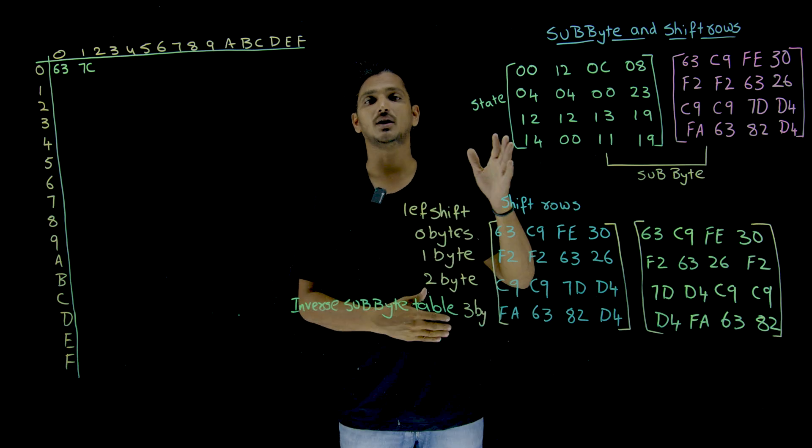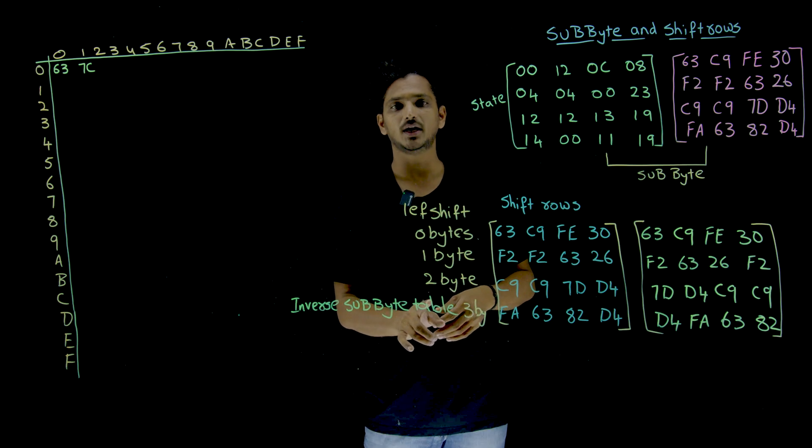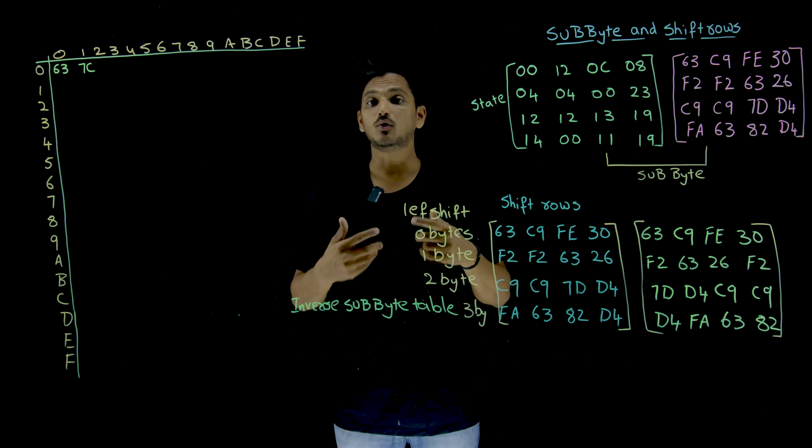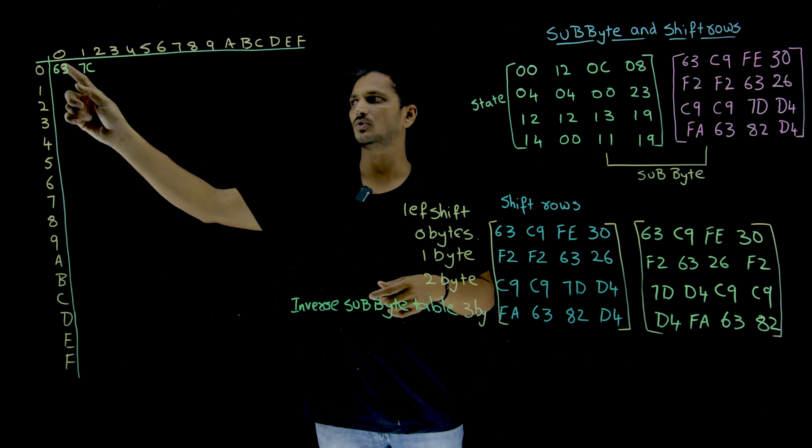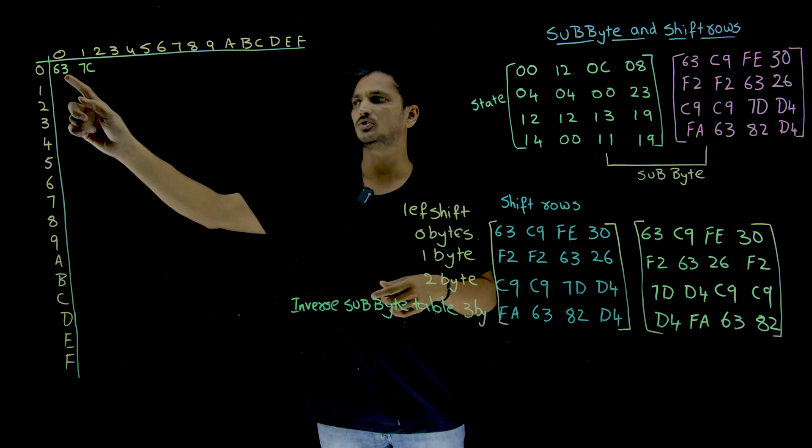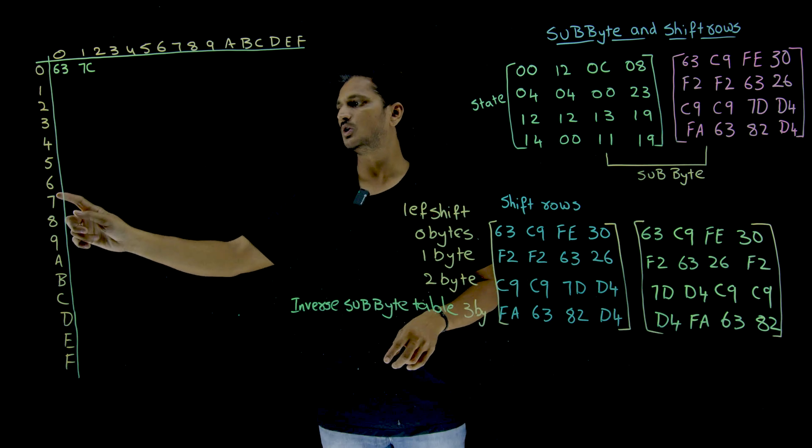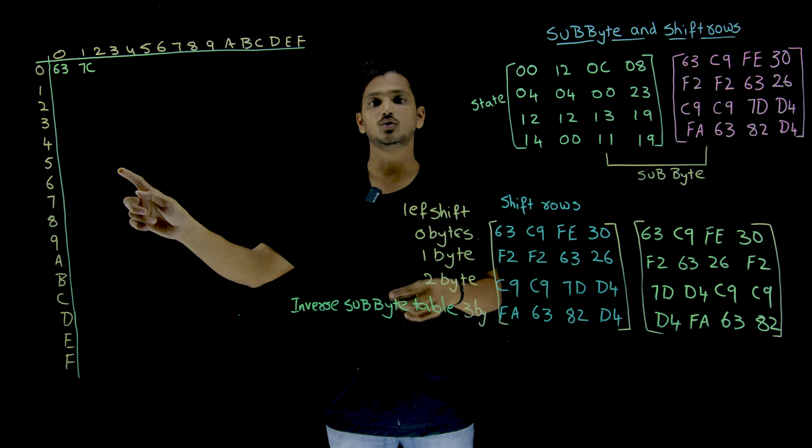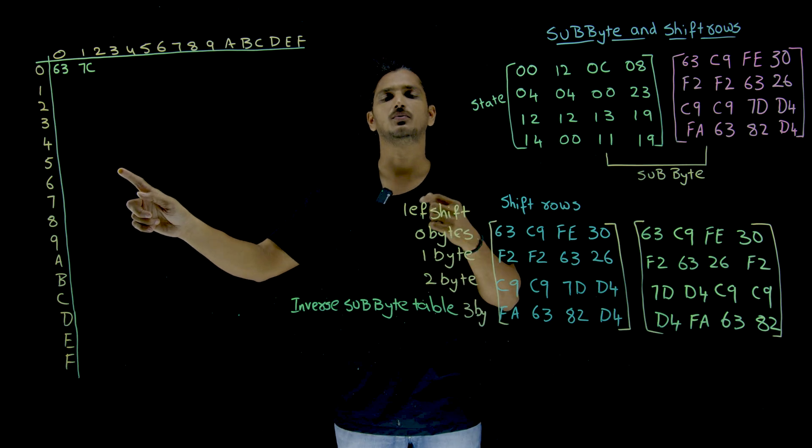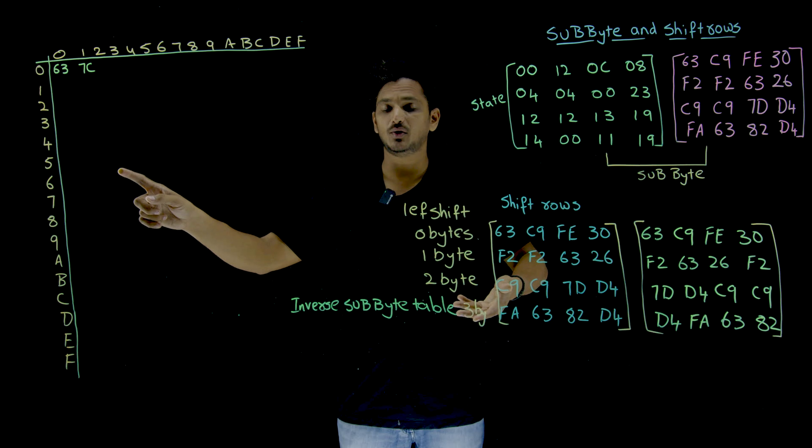Similarly, during the decryption we have to take inverse substitution table. How that will be? 6,3 which way? 0,0. In place of 0,0 you are substituting 6,3. So the inverse substitution table will be like this: in place of 6 and 3, sixth row and third column, you have to place 0,0. That is how inverse substitution table will be.